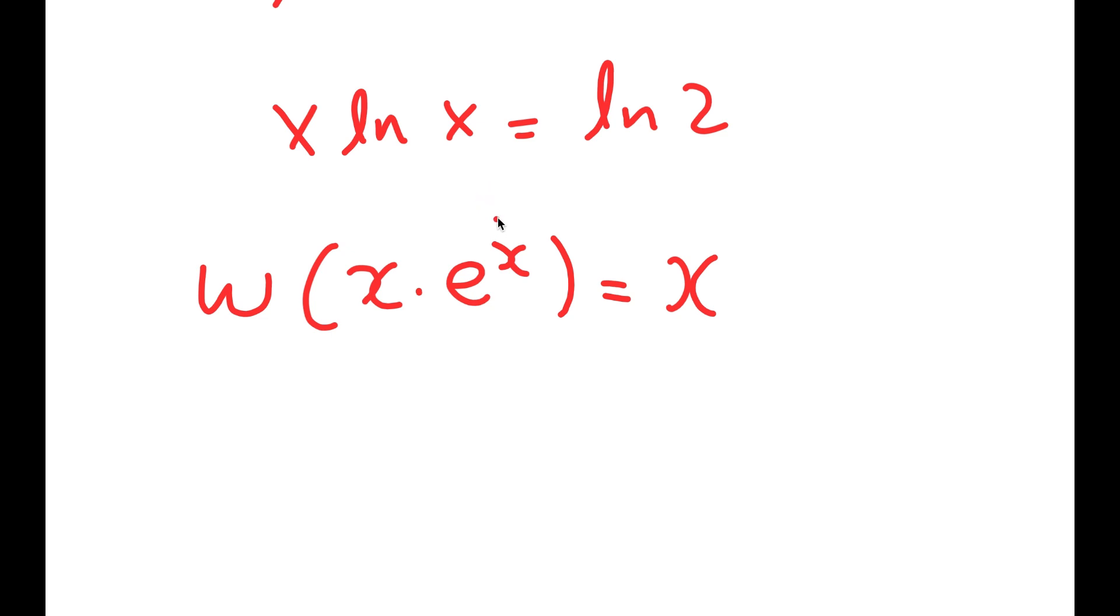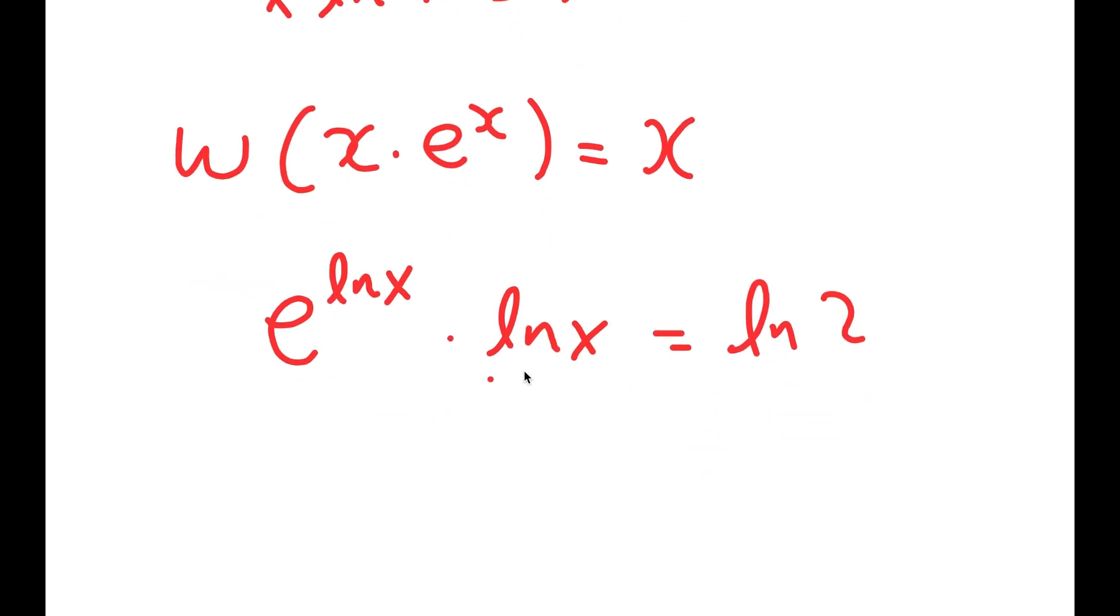Well, to do that, I'm going to rewrite x as e to the power of ln x. Because e to the power of ln x is equal to x, the ln and e cancel out. And now, x in this case is ln of x. So I have ln of x times e to the power of ln x.